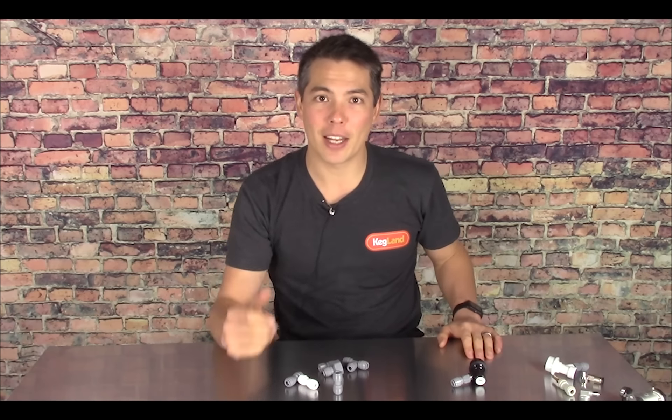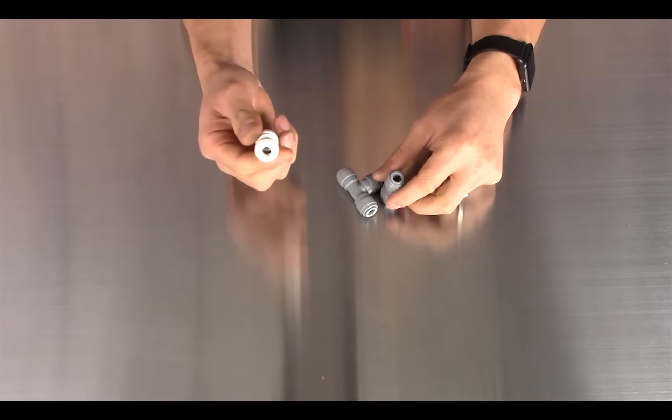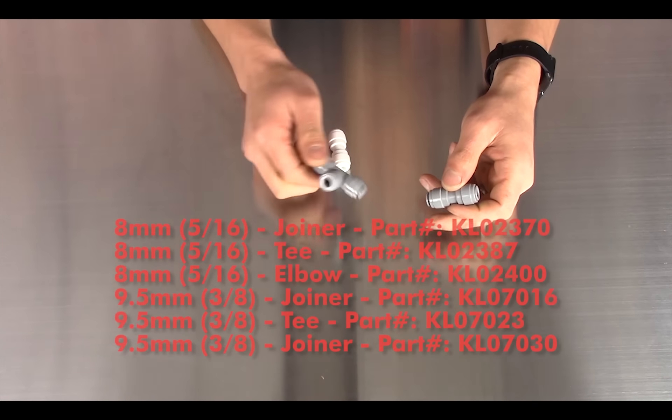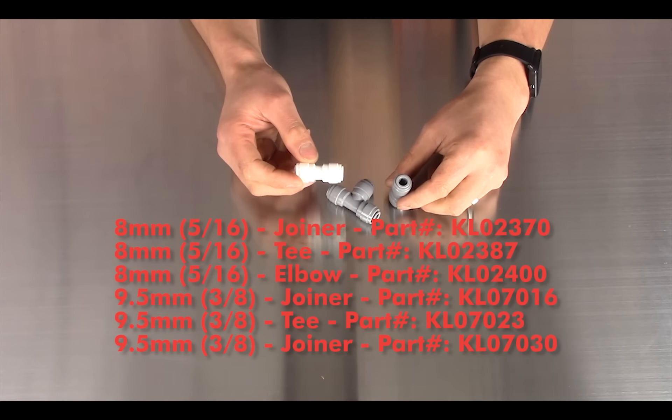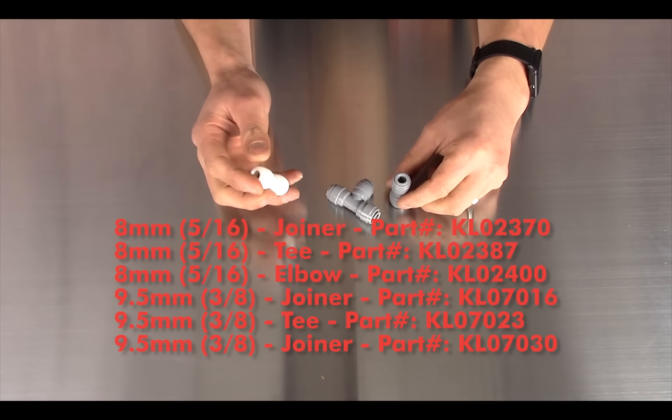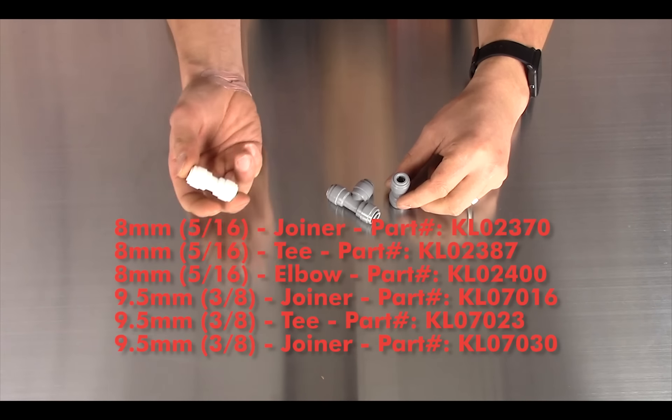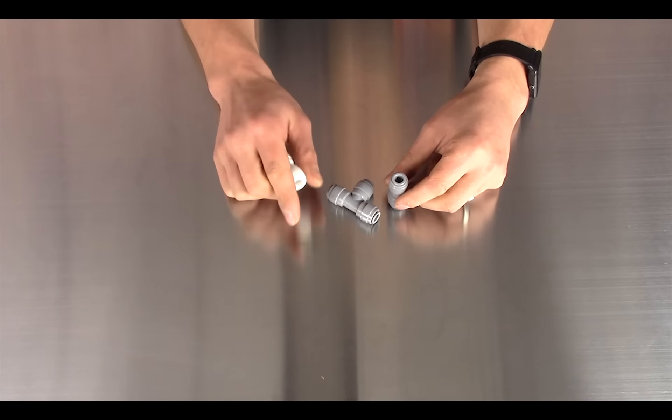Anyway let's get into it and I'll show you how these push-in fittings differ from some of the other ones on the market. Now we do have the basic fittings like this, like things like joiners and t-pieces and stuff like that, and also in a couple different sizes. So these are the 8mm or 5/16 but also we're doing the 3/8 which is another common size both in the States and also that's basically 9.5mm in Australia. So we've got some larger fittings as well and basically expanding the range.